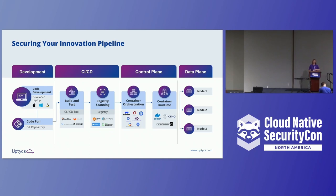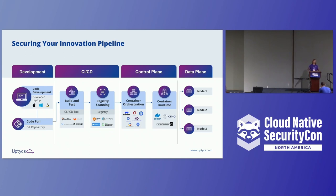Take runtime, for example. At the control plane layer you have runtime orchestration, compliance, and network policy. At the data plane layer, you have rich socket event and process event data. But teams right now are really struggling with correlating this data together, or correlating it back to your back-end infrastructure. Imagine a container escape attack — your node gets compromised, attackers try to hop to another container, another node, maybe to the control plane or your AWS infrastructure. Are you able to correlate this data back together? Attackers don't think in silos, and we need to be securing across the CICD pipeline so we're not creating these security gaps.